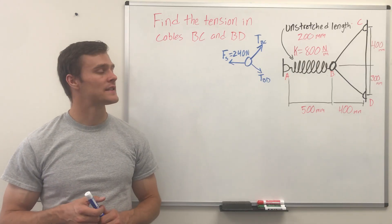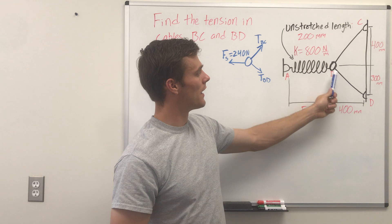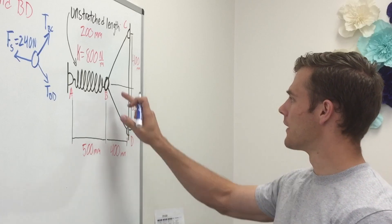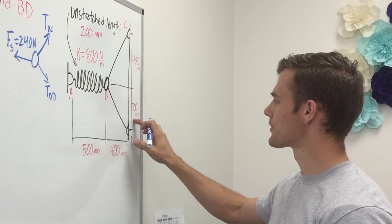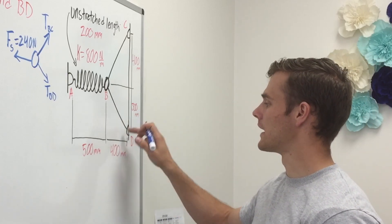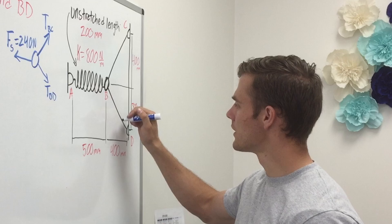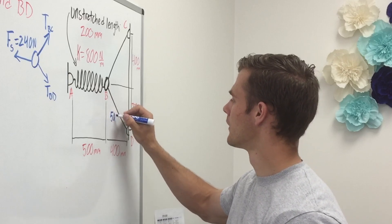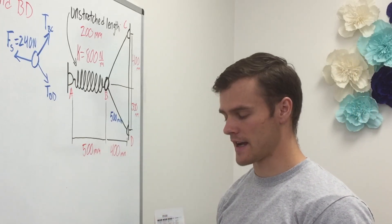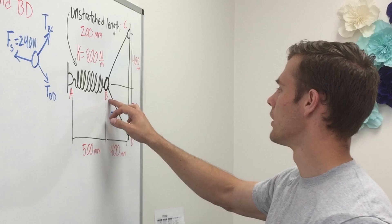The next thing we need to do is see what direction these two cables are pulling, and we can do that by solving for the geometry of these two triangles. This side of the triangle is 400 millimeters, this side is 300, and this side isn't given to us — but we know it's going to be a 3-4-5 triangle because that's the ratio of the sides. So without solving for anything, we know that this side is 500 millimeters. We can use that ratio of sides to solve for the direction of the force along this cable.